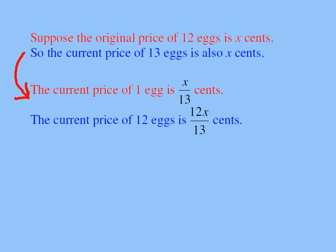From here, I can also say the following: if I know the price of 1 egg, how do I find the price of 12 eggs? I just multiply the cost of 1 egg by 12, so 12 eggs cost 12x over 13 cents.